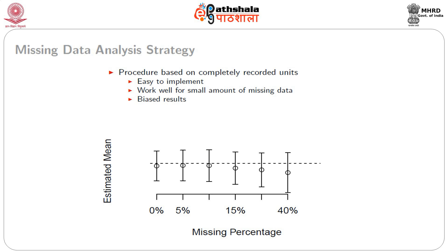What are the strategies we can adopt? The simplest is to analyze the data based on complete recorded units — discard the units having missing data. It is easy to implement and might work well when missing data is in very small amounts. A plot shows that as the missing percentage increases, the complete data analysis produces more and more biased estimates with increased confidence intervals — the estimate steadily becomes more biased as the missing percentage grows.